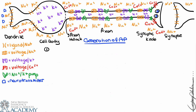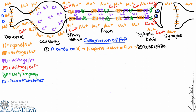Generation of an action potential begins with a graded potential. A neurotransmitter binds to the ligand-gated sodium ion channel, causing the channel to open, and then we have sodium influx. Sodium influx is positive charge into the cell, which means that we are going to depolarize the cell, and this depolarization is in the form of a graded potential. We can see it bind and then we see the sodium ions rush in.